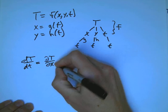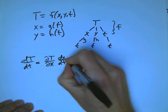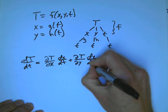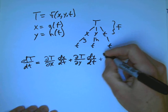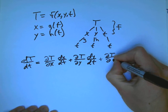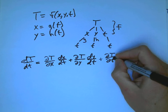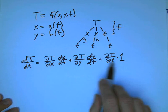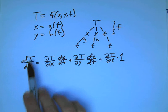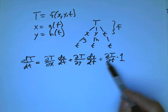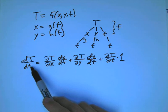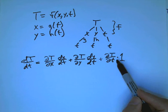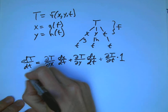Now dT/dt is going to have three contributions. It's going to be how sensitive is the temperature to a change in x times how fast the bug's moving in x, plus how sensitive is the temperature to a y position times how fast is the bug moving in y, plus how sensitive is the temperature to a change in time without any position change times dT/dt, which is 1. So this is the relationship between these two quantities. The total derivative accounts for all ways direct and indirect of how the temperature could depend on time, and here's just the direct dependence on time. So the total is the indirect plus the direct.